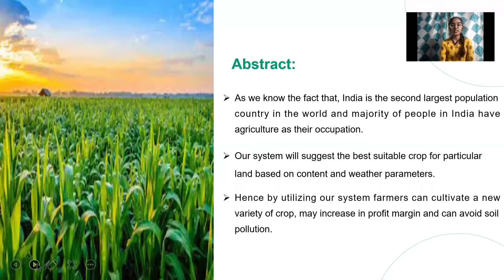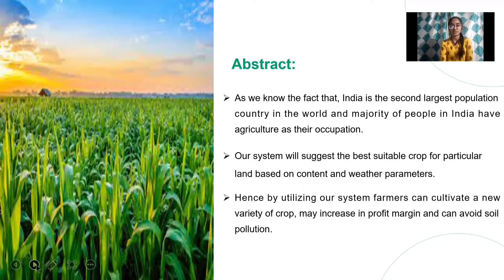As we all know, India is the second largest population country in the world, in which the majority of people have agriculture as their occupation. Our system will suggest the best suitable crop for particular land based on soil content and weather parameters. By utilizing our system, farmers can cultivate a new variety of crop, which increases the profit margin and can also avoid soil pollution.